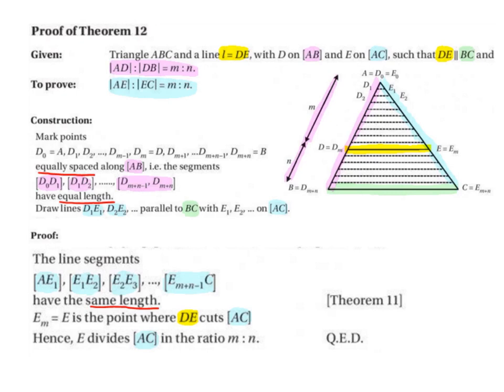And that is because each of the line segments A E1, E1 E2, E2 E3, and so on, have the same length.